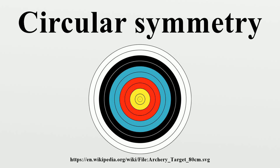Reflective circular symmetry has all dihedral symmetry, Dn, as subgroup symmetries. In three dimensions, a surface or solid of revolution has circular symmetry around an axis, also called cylindrical symmetry. For example, a right circular cone.